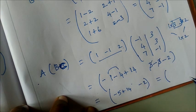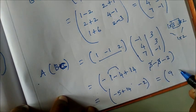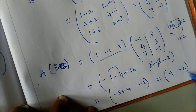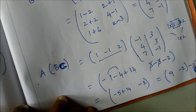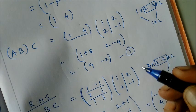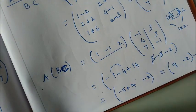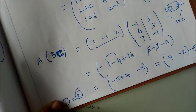LHS = RHS: [9, −2] = [9, −2]. Both sides are equal, so (AB)C = A(BC) is verified. That's all. Thank you.